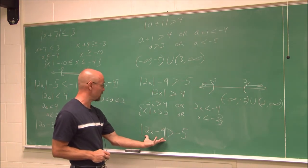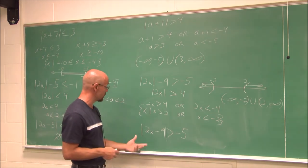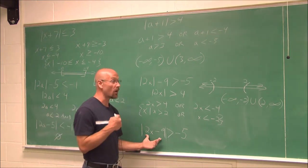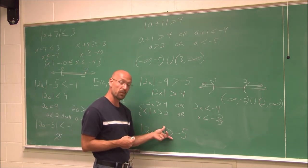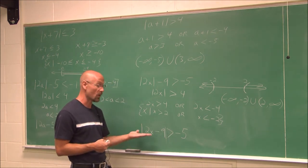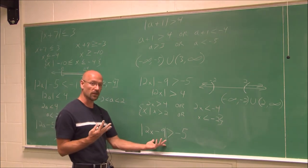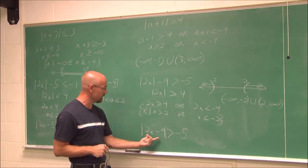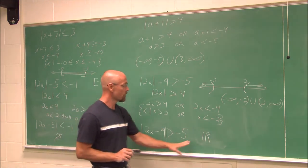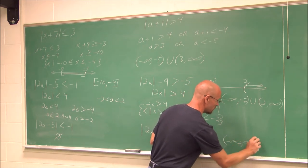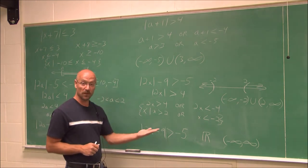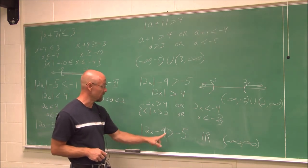Lastly, we have the absolute value of 2x minus 9 is greater than negative 5. If we assess it — absolute values are always positive, so they will always be greater than a negative. No matter what value I put in there, it's going to be true. So this has all real solutions, and we use the symbol for all real numbers. In interval notation, negative infinity to infinity. If we were to graph it, it would just be a line across the entire number line — all values make this true, because all absolute values are greater than negatives.